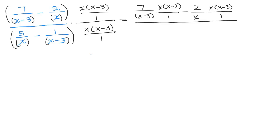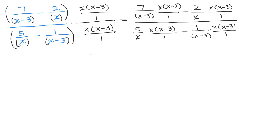I distributed the numerator and I'm going to do the same thing in the denominator. So I have 5 over x times x times (x minus 3), minus 1 over (x minus 3) times x times (x minus 3). Now for the fun part — we're going to get rid of the complex fraction because the (x minus 3) cancels here, this x cancels here, this x cancels here, and this (x minus 3) cancels here.